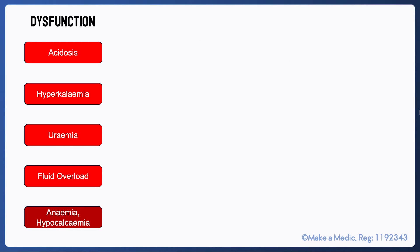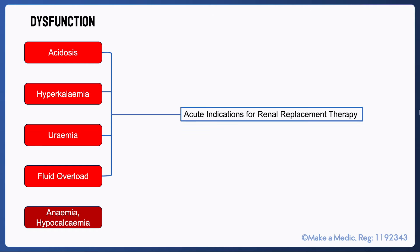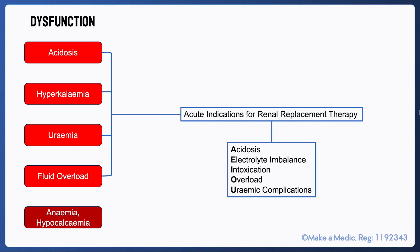Based on what we have just discussed, we can deduce the main indications for renal replacement therapy. The loss of the hormonal functions of the kidneys tends to be a more chronic issue and is treated medically with erythropoietin analogues and alpha-calcidol. All the other consequences of renal dysfunction are acute indications for renal replacement therapy. These can be remembered as AEIOU, which stands for acidosis, electrolyte imbalance, intoxication such as salicylate poisoning, fluid overload, and uraemic complications.